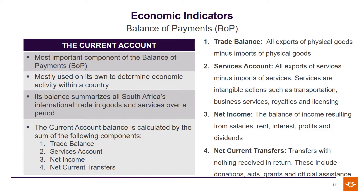The current account balance is calculated by the sum of its components: the trade balance, which looks at all exports of physical goods minus imports of physical goods; the services account, which is all exports of services less imports of services, where services are intangible actions such as transportation, business services, royalties, and licensing; net income, which is the balance of income resulting from salaries, rent, interest, profits, and dividends; and net current transfers, which are transfers with nothing received in return, including donations, aid, grants, and official assistance.